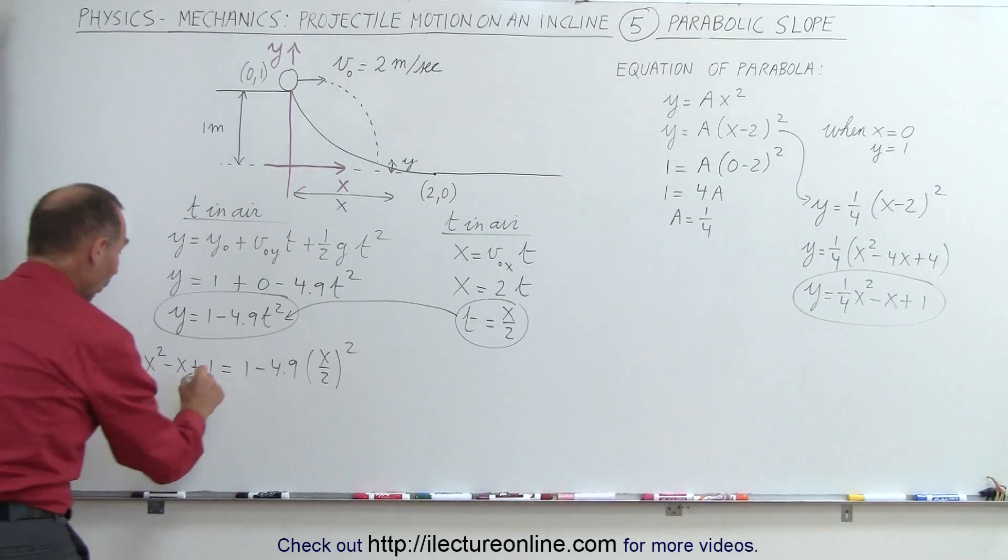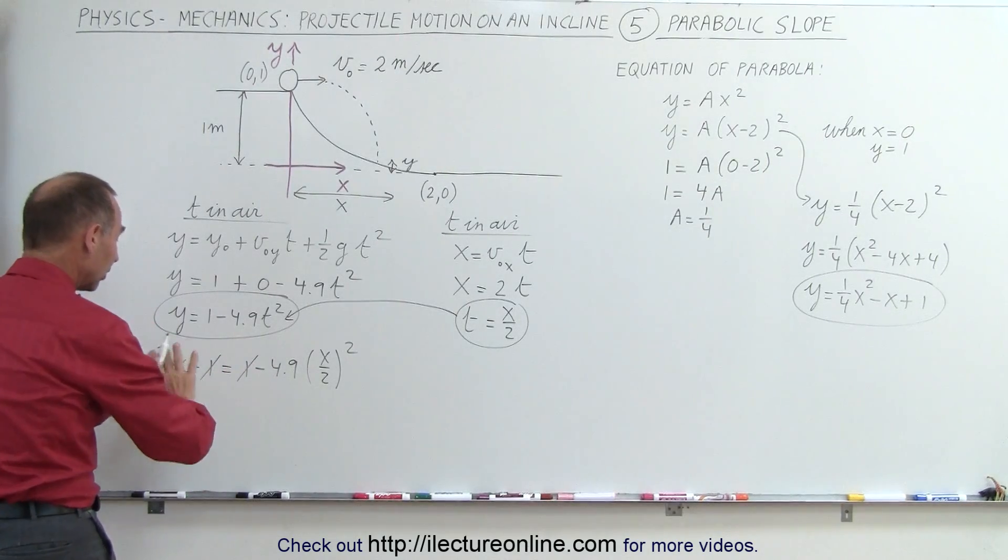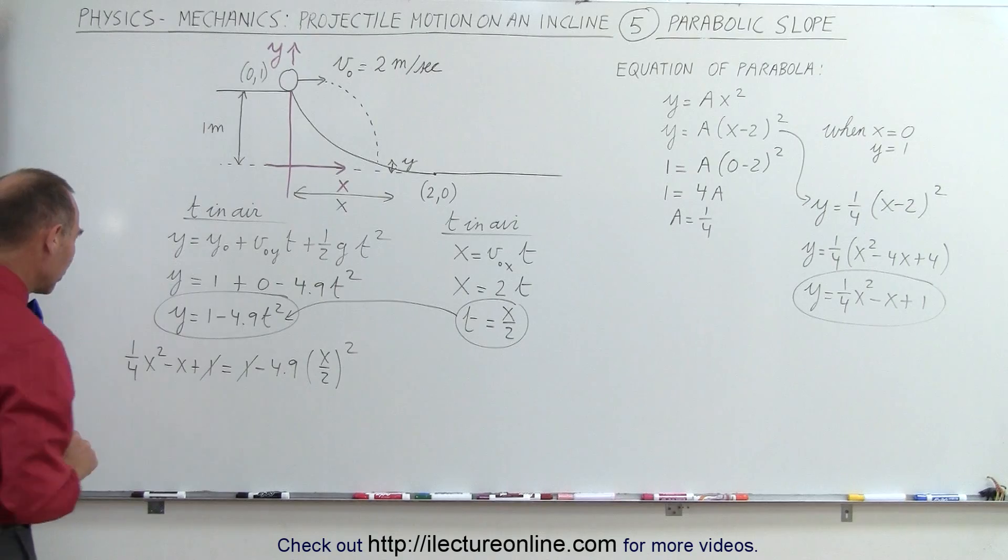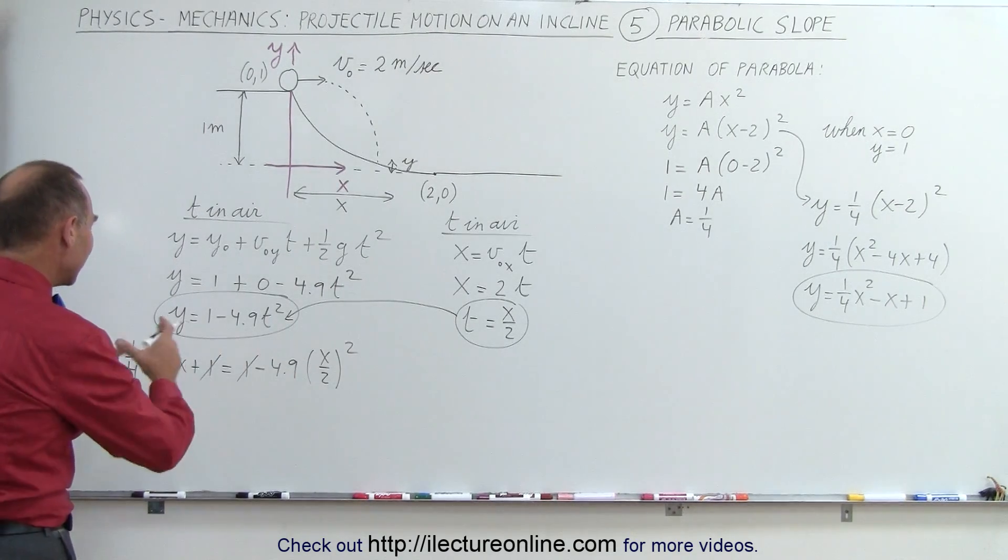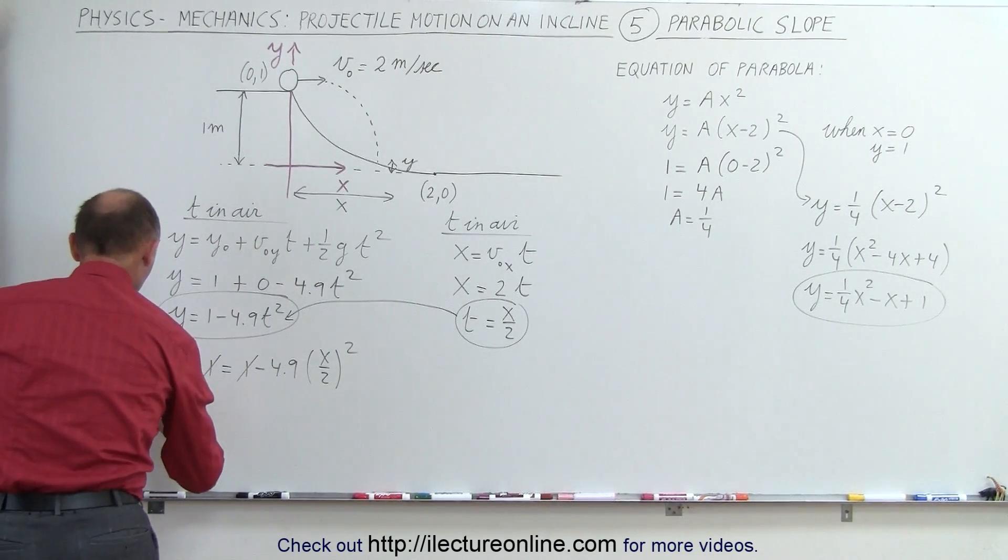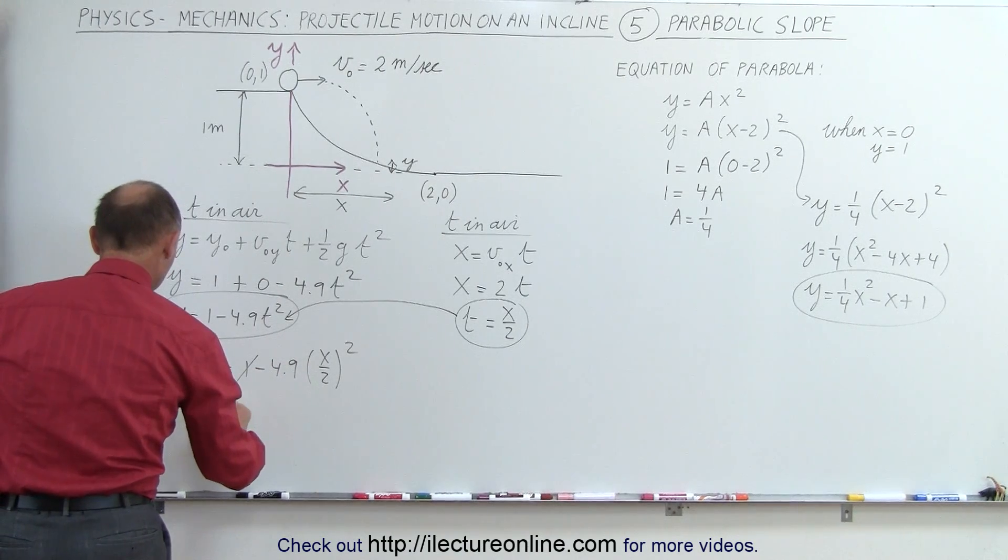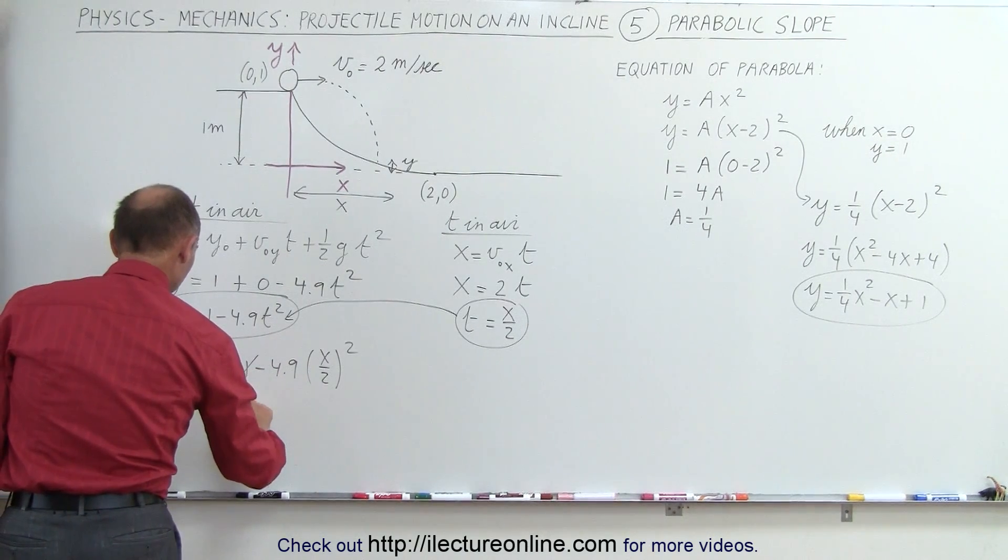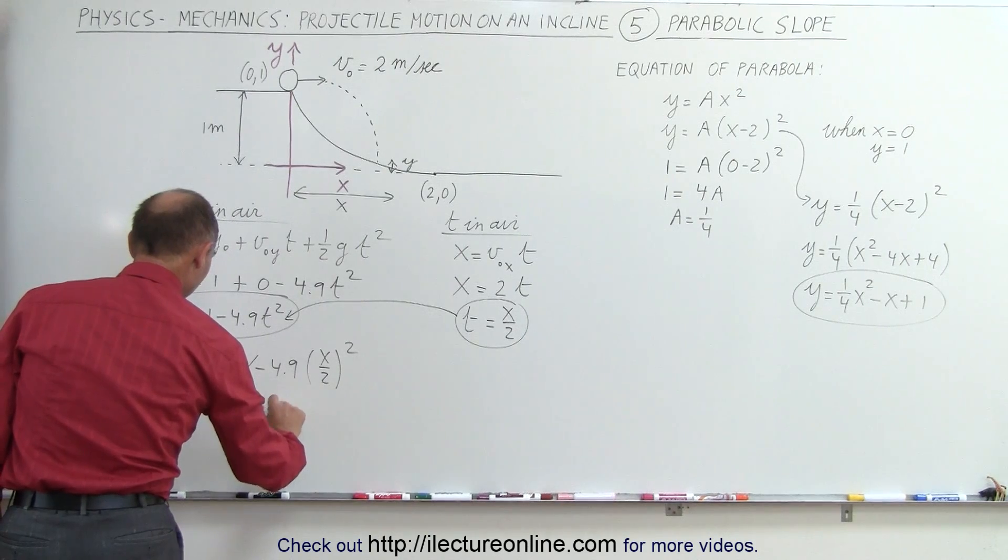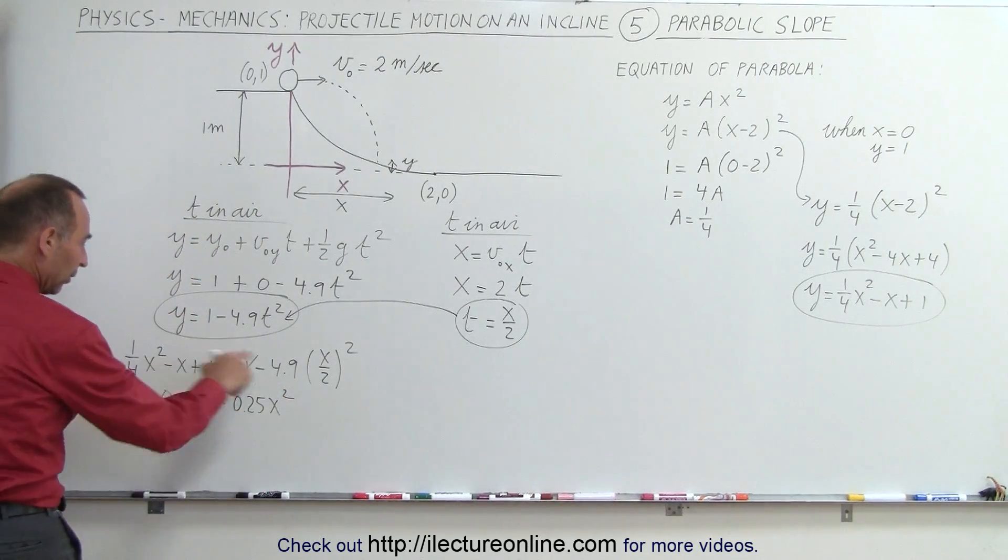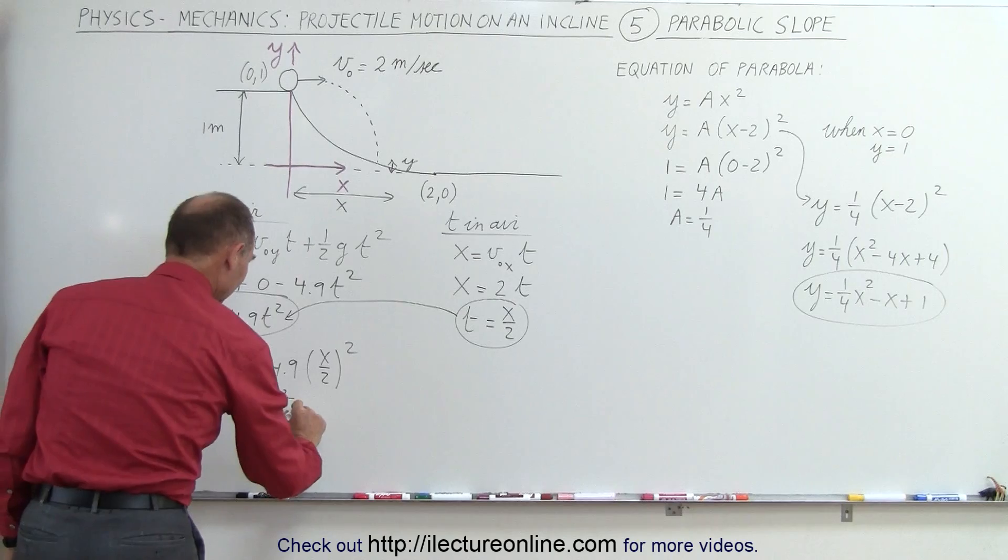Notice that the 1 cancels out on both sides. That gets rid of the constant term, which makes it easier to solve the quadratic equation. And then when we combine everything on one side, we get 0 equals, moving this across, we get a positive x minus 0.25x squared. That's 1 quarter x squared moved to the right side. And then minus,